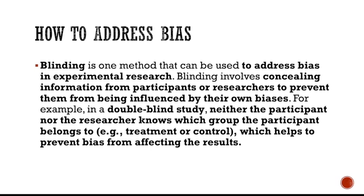You can blind the participants, blind the researchers, or blind both — and that is what we call a double-blind study. In a double-blind study, neither the participants nor the researchers know which group the participant belongs to, whether it is the control group or the experimental group. This helps prevent bias from affecting the results. Only the leader of the research actually knows what is going on. Throughout the experiment, everything in the process should be standardized — the approach for the control group should be the same as for the experimental group.